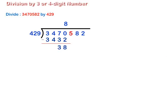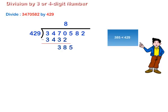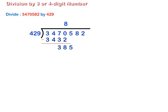Step 2. We bring down the next digit, that is 5 from the dividend and write it on the right side of the remainder, that is 38. The dividend becomes 385. But 385 is less than 429. We write 0 on the right side of the digit 8 in the quotient and bring down the next digit, that is 8 from the dividend and write it on the right of 385. So that the next dividend becomes 3858.